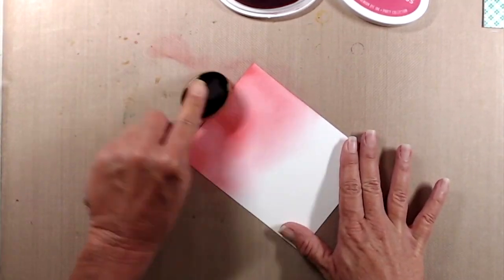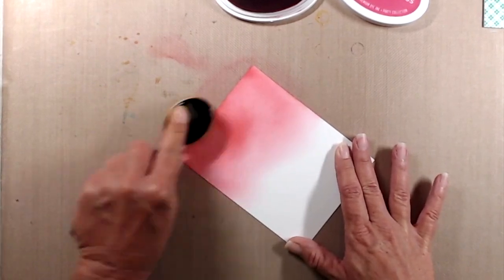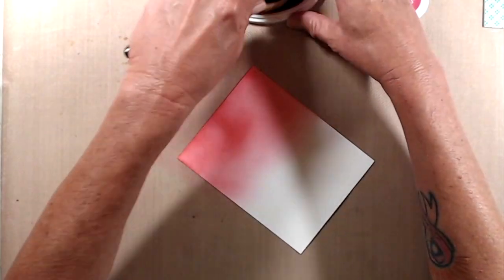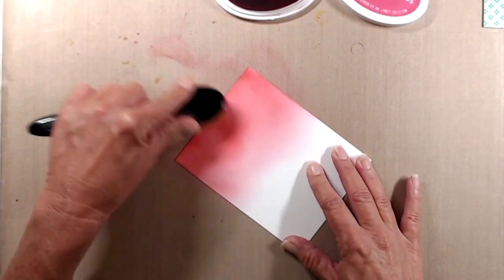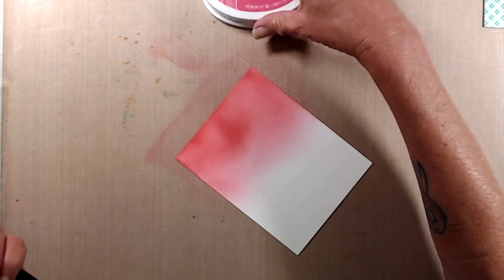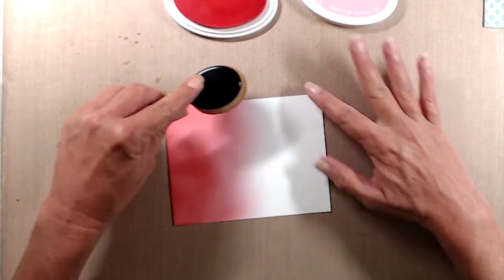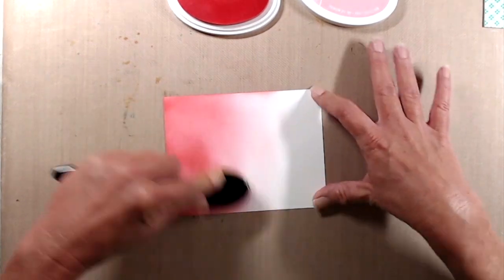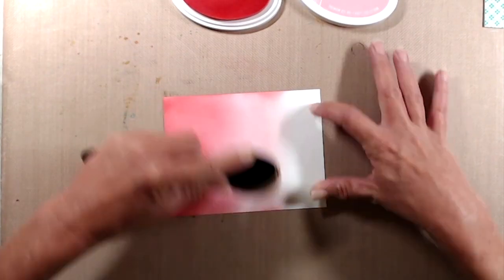But one of the comments on that video left by Amanda over at Ryzen Procrastinate read something to the effect of, I love how you used the zebra stripe stencil for water. I didn't even see this stencil as zebra stripes, so a huge thank you to Amanda for the inspiration because I decided to use the Currents stencil as zebra stripes for my first card.